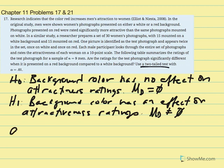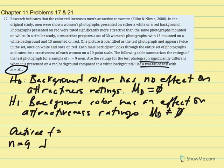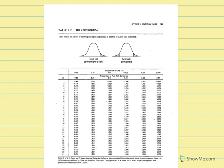Next we need to find our critical T. That's contingent on conducting a two-tail test with alpha .01. We need to identify n, which equals 9 men in our sample. Degrees of freedom equal 9 minus 1, which is 8. Using that to find our critical T, with a two-tail test at .01 and degrees of freedom equal to 8, our critical T is equal to 3.355.